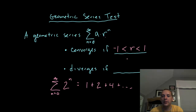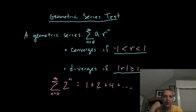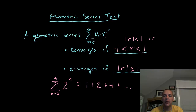The series will diverge if you're outside of minus one to one. One way to say that is: if the absolute value of r is greater than or equal to one. Conversely, the series converges when the absolute value of r is strictly less than one. Either of those notations is fine.